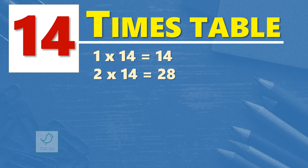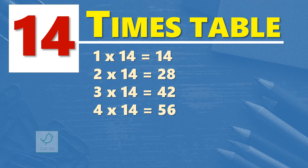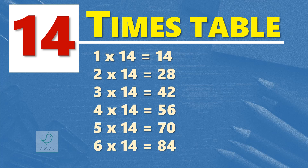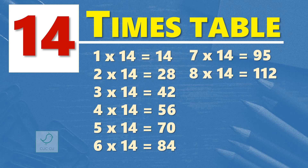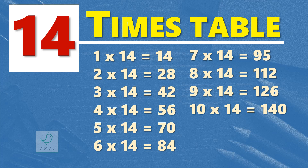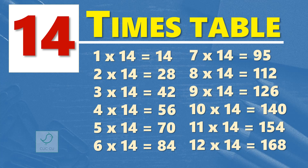2 times 14 are 28. 3 times 14 are 42. 4 times 14 are 56. 5 times 14 are 70. 6 times 14 are 84. 7 times 14 are 98. 8 times 14 are 112. 9 times 14 are 126. 10 times 14 are 140. 11 times 14 are 154. 12 times 14 are 168.